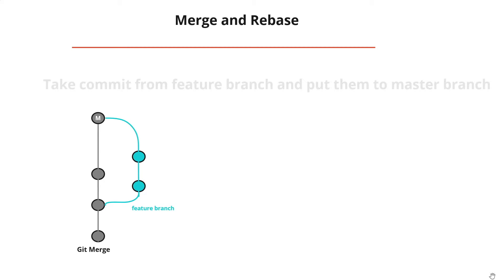Over time, if you have multiple branches with multiple commits and you merge all of them into the master branch, your commit graph will look increasingly complex. Instead of using git merge, we can use git rebase to keep things cleaner.